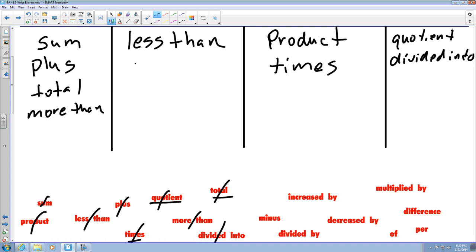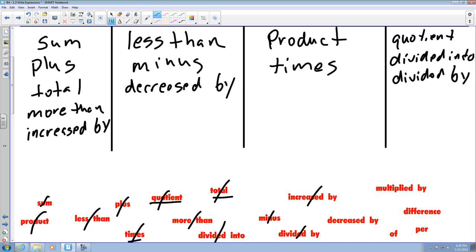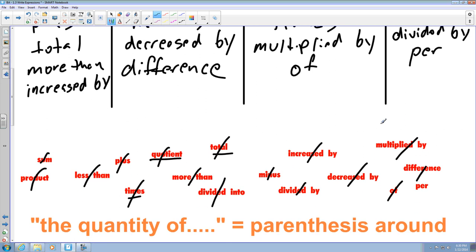Minus, that would be subtraction. Divided by would also be division. Increased by would be addition. Decreased by would be subtraction. Difference would be subtraction. Of would be multiplication, and per would be division, like miles per gallon. And did I cover all of them? Yeah, it looks like I did.